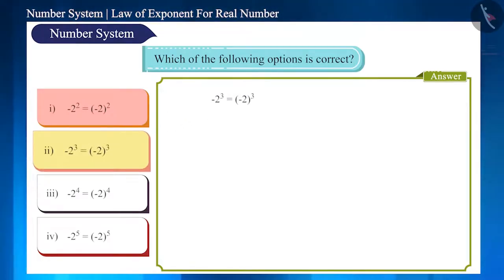Now let us see the second option. On the left side, the power of minus 2 is 3, that makes it cube of minus 2, and its value is minus 8. On the right side, the power of minus 2 in brackets is 3, and it also has a value of minus 8. That is, the left hand side is equal to the right hand side.